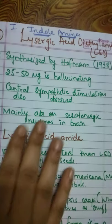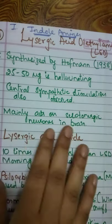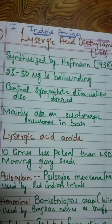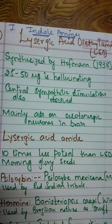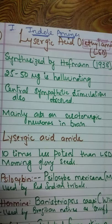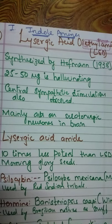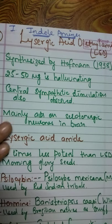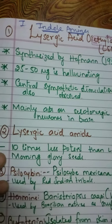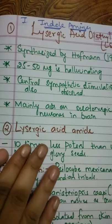Apart from producing psychosis-like conditions, LSD also produces central sympathetic stimulation. These agents mainly act on serotonergic neurons in the brain. Since treating psychosis requires reducing serotonin levels, we can conclude that LSD likely increases serotonergic activity.